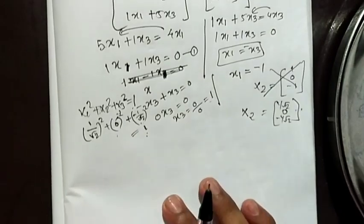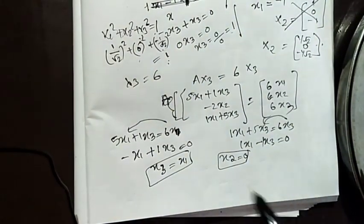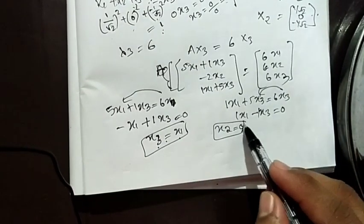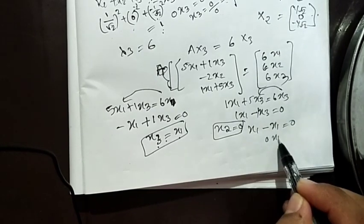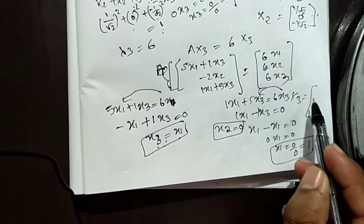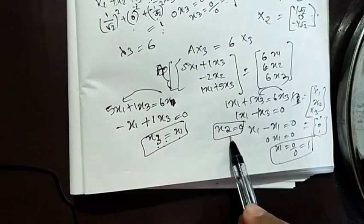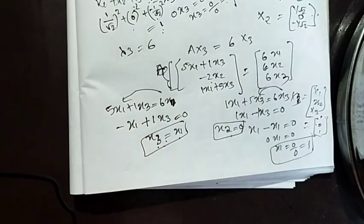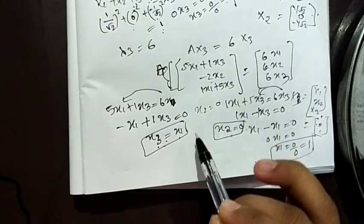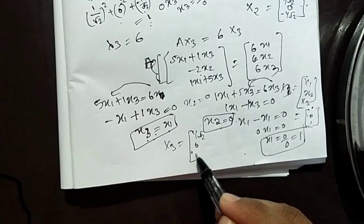For lambda 3 equal to 6, we find x3 equal to x1, so x1 minus x1 equal to 0. We get x1 equal to 1, x2 equal to 0, x3 equal to 1. So the eigenvector is [1, 0, 1]. For normalization, we divide by root 2: the normalized eigenvector is 1 over root 2 times [1, 0, 1], giving components 1 by root 2, 0, and 1 by root 2.